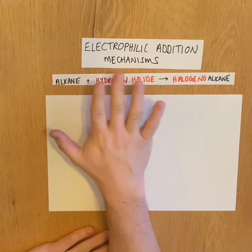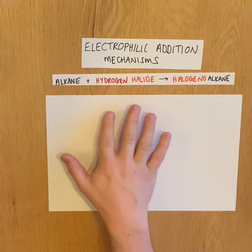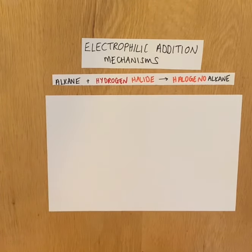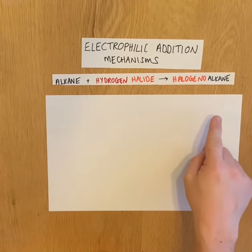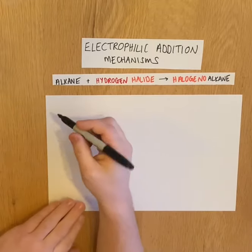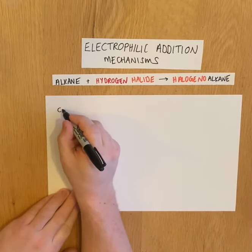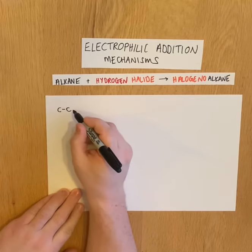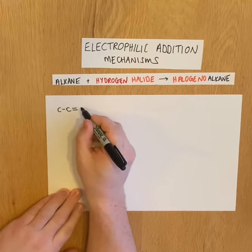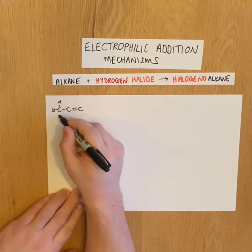This video will look at the electrophilic addition mechanism for alkenes reacting with hydrogen halides to make halogenoalkanes. It's an addition reaction because we have one product. We'll use propene as our example because it's an asymmetric alkene.